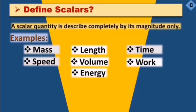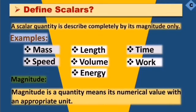Now we will talk about mass as an example. Mass says that you have 5 kg sugar. It is the magnitude of the sugar, 5 kg. The magnitude is a quantity. It is numerical value with an appropriate unit.